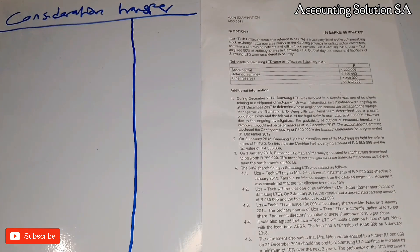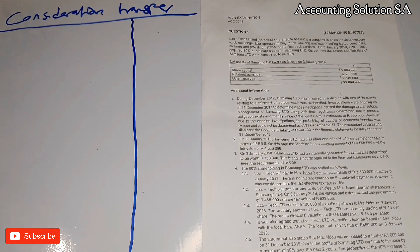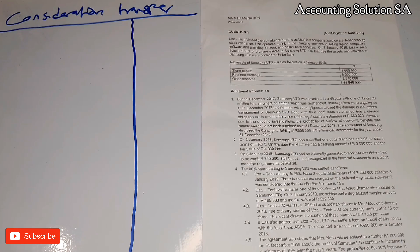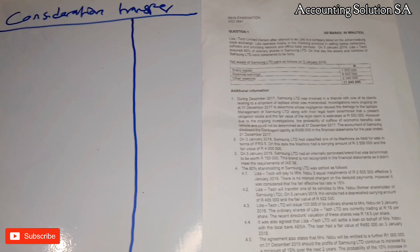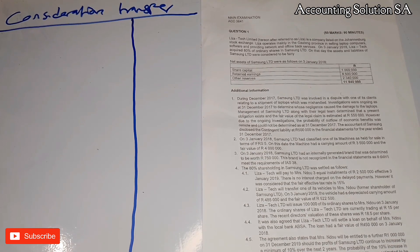Number one, what you have to identify is whether we are dealing with an internal case or external case. If you check this question, on the first paragraph, it says LaserTech Limited is a company listed on the Chinese Bergstock Exchange. LaserTech operates mainly in Haudenry province selling laptops, computers, and software, providing network office back services until January 2018. LaserTech acquired 80% of ordinary shares in Samsung Limited. On that day, the assets and liabilities of Samsung were considered to be at fair value. In this case, we are going to regard this as an external case.